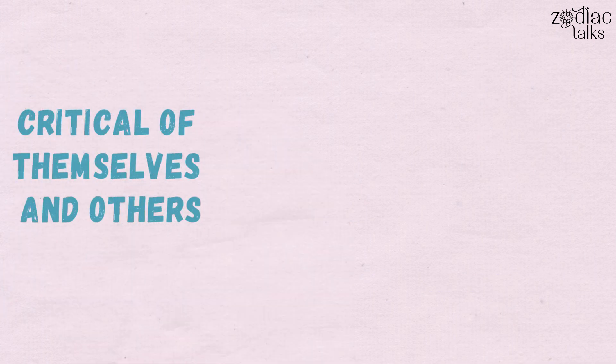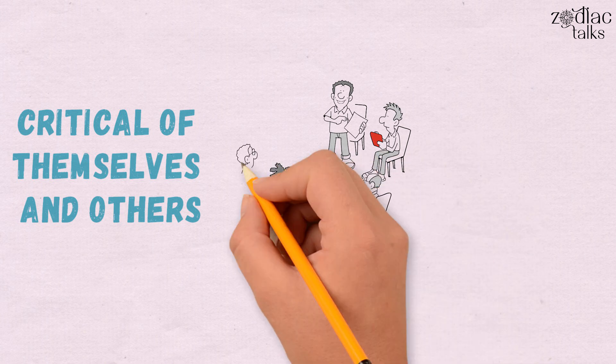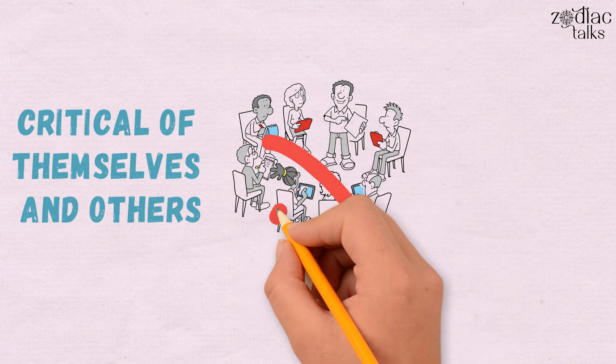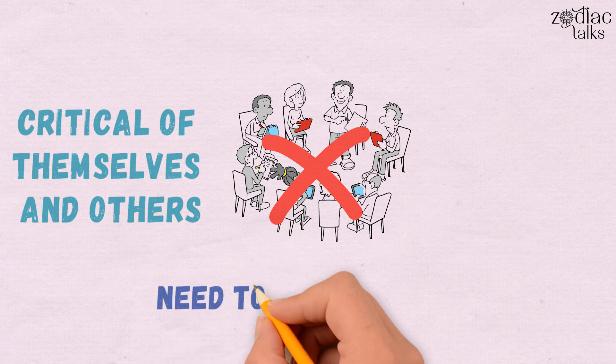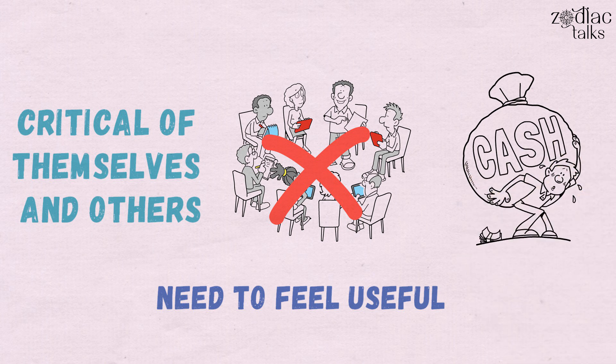They're critical of themselves and others. People with a prominent Sixth House do not engage in activities for the mere purpose of entertainment. They're practical and need to feel useful, becoming frugal and steering away from overindulgence.